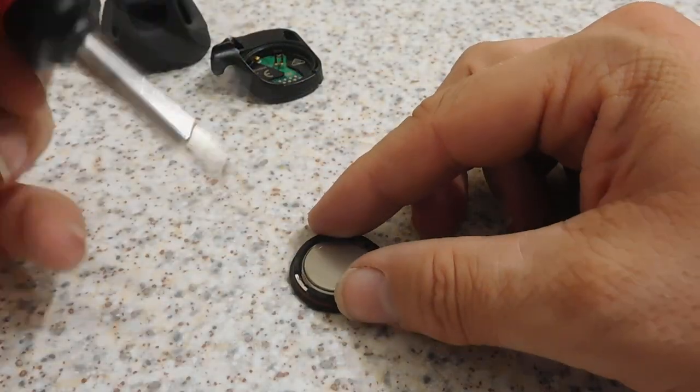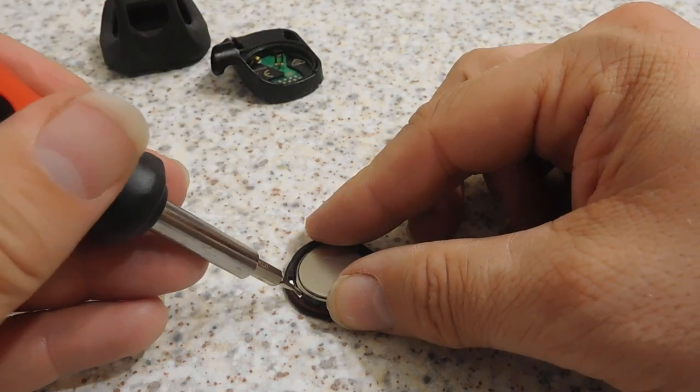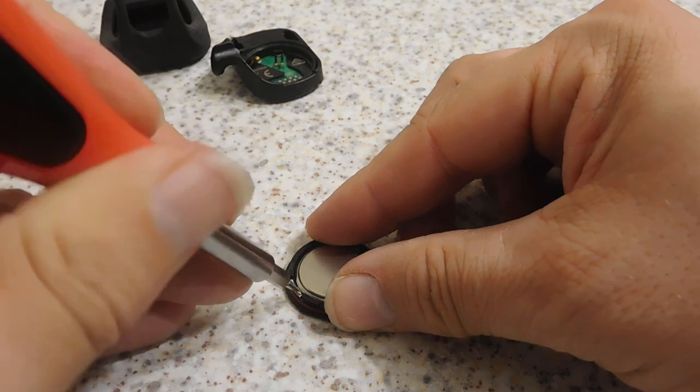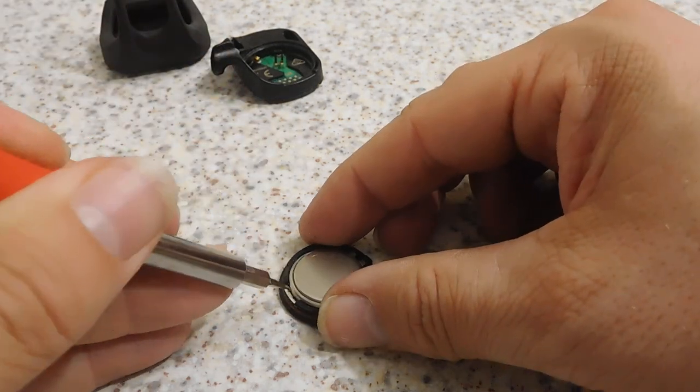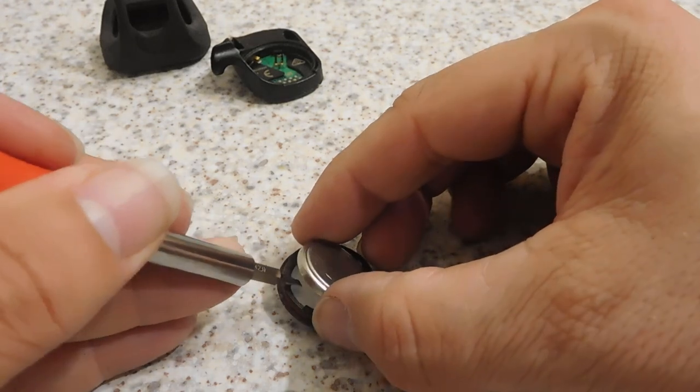Next thing you do is take the battery out. This can actually be quite tricky sometimes. This is where you need a little thin screwdriver. Put that in there, give it a push and a bit of a twist, and the battery should come out quite easily.